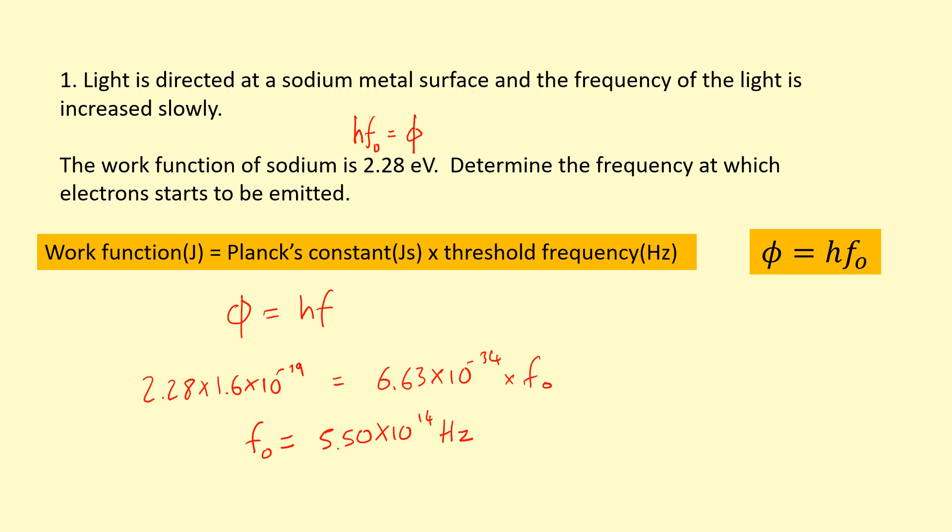If I just use c over f naught, I can figure out the longest wavelength we can have, which is 545 nanometers. So it needs to be shorter than this wavelength here. This is green light, so it means that we need to have photons with energy greater than that of green light for electrons to be emitted from the sodium metal.